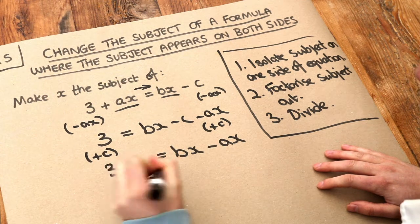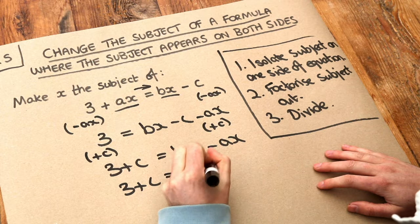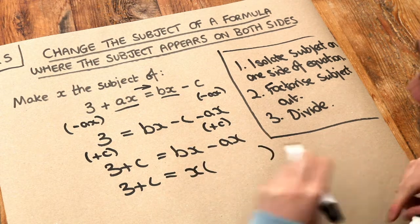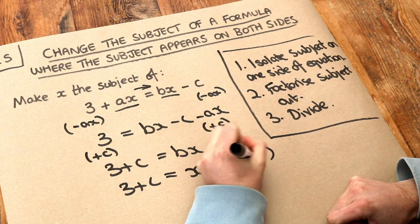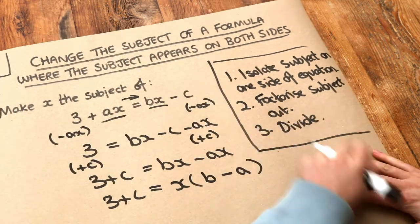We just leave the left hand side as it is. If we factorize x out we have a single bracket here. x times what is bx? Well it's b. x times what is minus ax? It's minus a. So now we've done part 2 of the method.